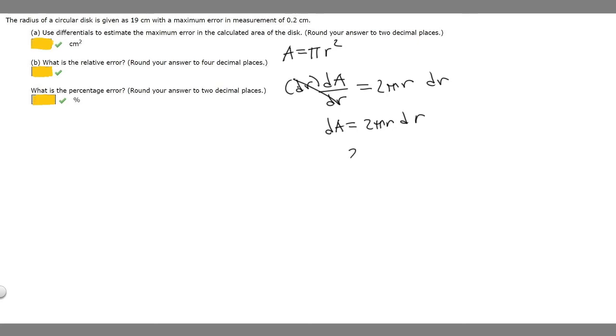Plugging everything in: 2π times 19 times 0.2. 19 times 2 is 38, so this is 38π times 0.2. If you plug this into your calculator, you get 23.876 and so on.